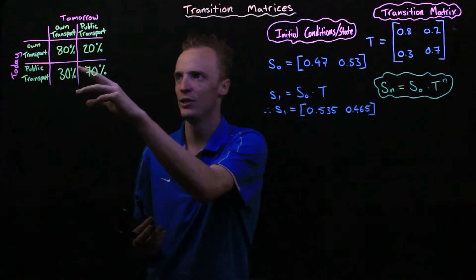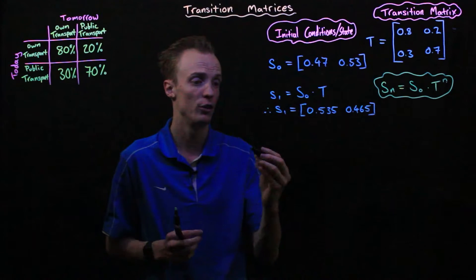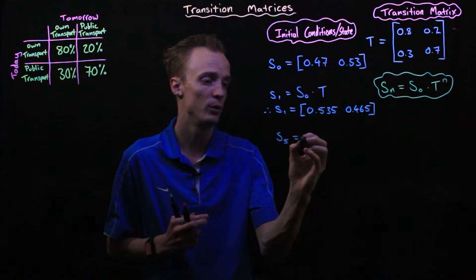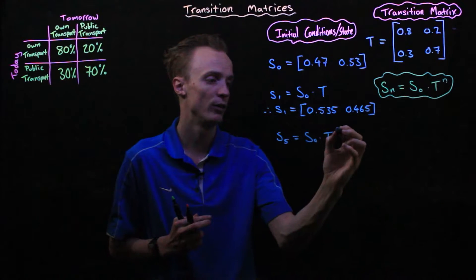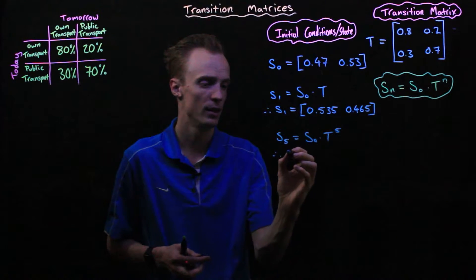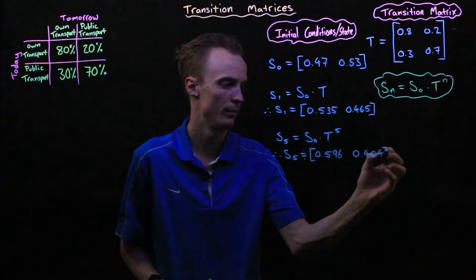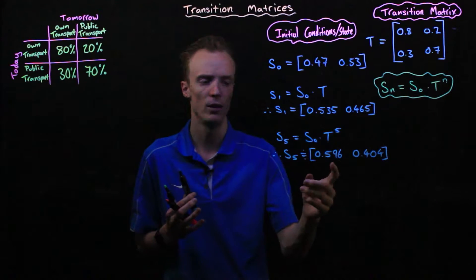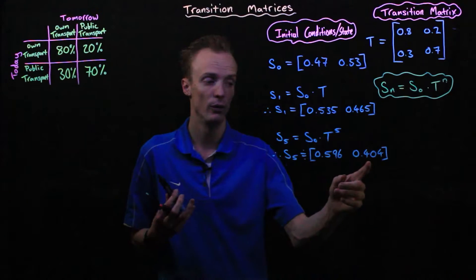Assuming the transition matrix doesn't change, we can do this for any number of days. For example, after five days, S₅ equals the initial state matrix multiplied by T to the power of 5. This gives us approximately 59.6% of people coming via their own transport versus 40.4% via public transport.